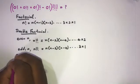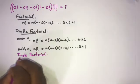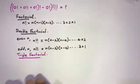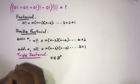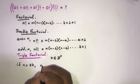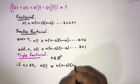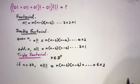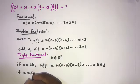Now we are going to talk about triple factorial. For positive integers n, if n is equal to 3 times k, then n triple factorial is equal to n times (n minus 3) times (n minus 6) and so on down to 6 times 3.